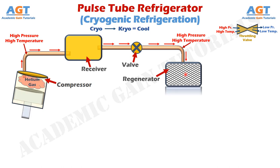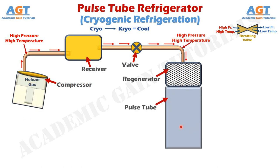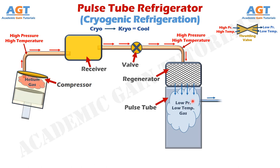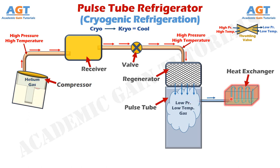After that, this regenerator is connected to a pulse tube. The gas coming out of the regenerator becomes low pressure, low temperature gas at this point, and the low pressure cold gas is received at this portion of the pulse tube. From here we pass this cool gas to a heat exchanger, which uses the cool low temperature gas for cooling processes in it.